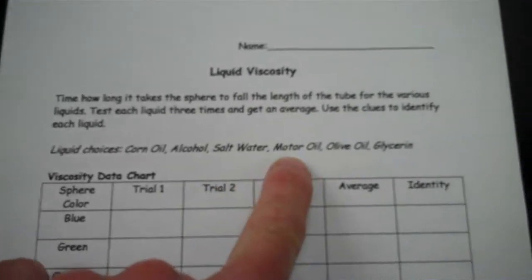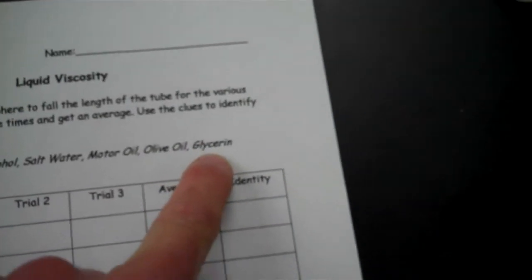There's one with corn oil, one with alcohol, one with salt water, one with motor oil, olive oil, and one with glycerin. For those of you that aren't familiar with glycerin, it's found in many products such as hand sanitizer.